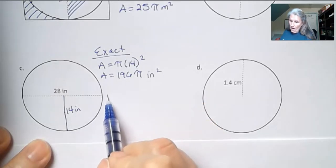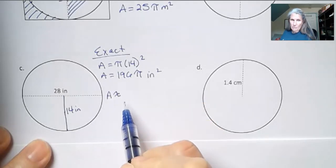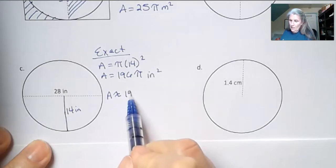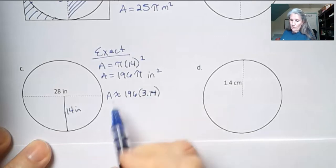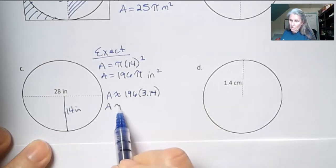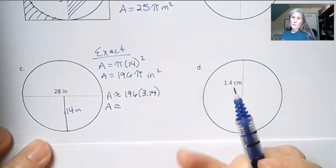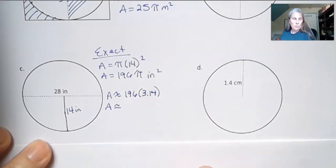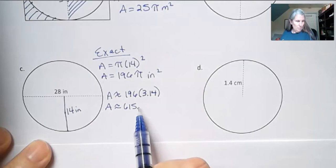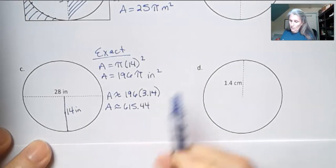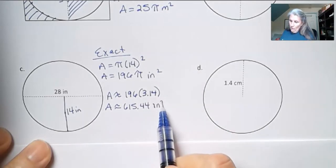And now if I want to approximate that, I'll use my approximation symbols. It's 196 times 3.14. That being the approximation. I also could use 22 over 7, but we were just told to use 3.14 in this one. And that gives me 615.44 inches squared as an approximation.